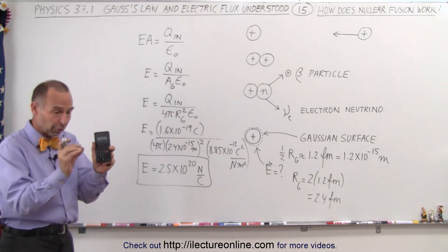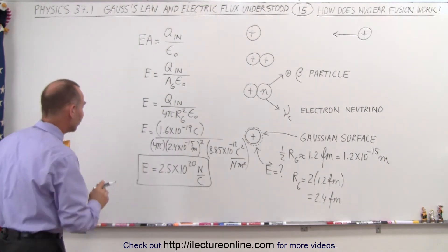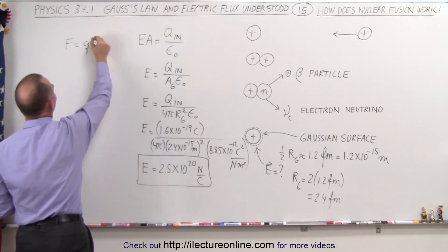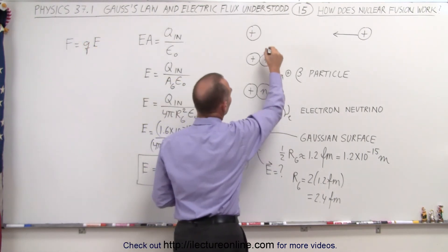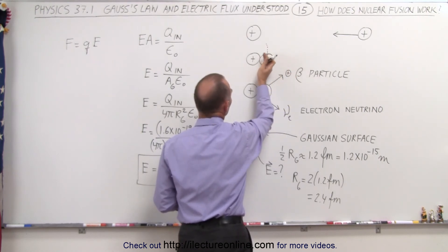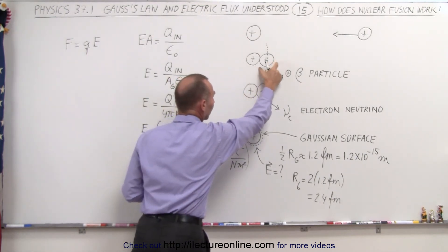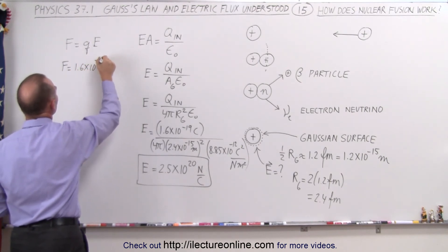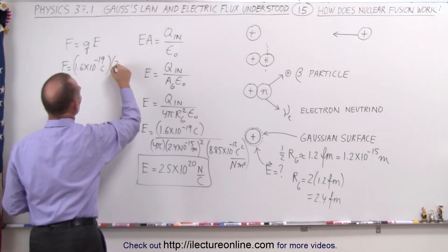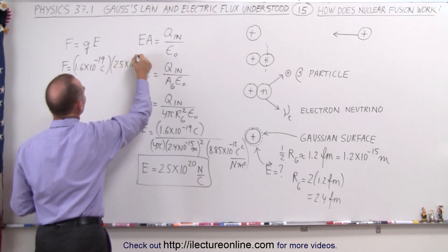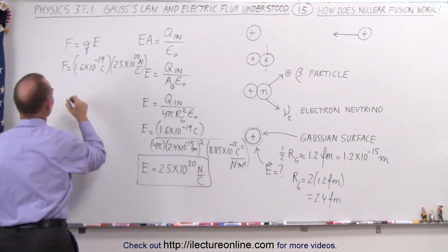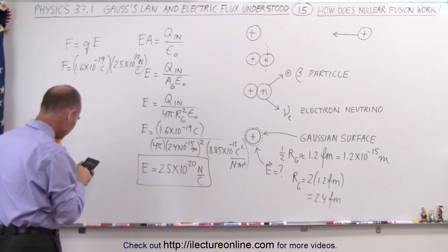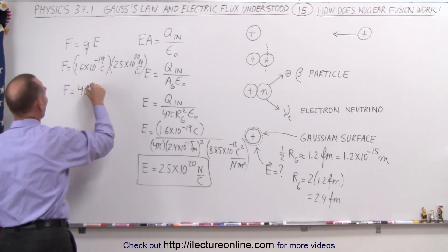So now what we can do is calculate the force between those two protons when they're at that distance apart. So now we can use Coulomb's law where we can say that the force experienced is going to be equal to the charge times the electric field at that location. So the force is going to be equal to 1.6 times 10 to the minus 19 coulombs multiplied times electric field of 2.5 times 10 to the 20th newtons per coulomb. Notice the coulombs cancel out and we have a force equal to 1.6 times 1.6 e to the 19 minus equals, wow, a force of about 40 newtons.